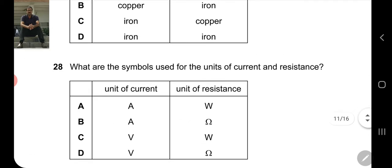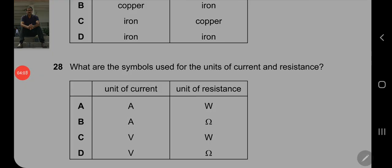Question number 28: What are the symbols used for the units of current and resistance? This is recalling your knowledge. The unit of current is Ampere and the unit of resistance is Ohm. Option B is the correct option. I hope this is clear to you. Thank you guys, so nice of you.